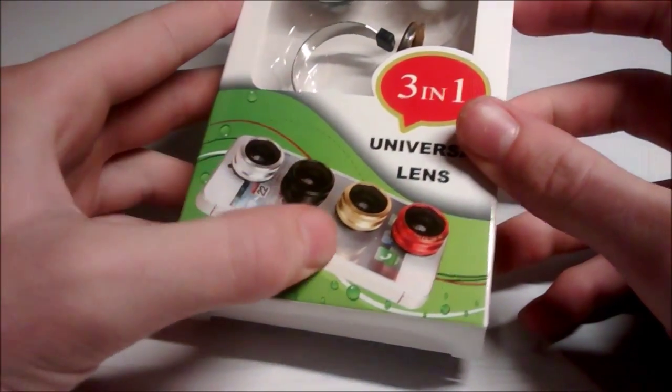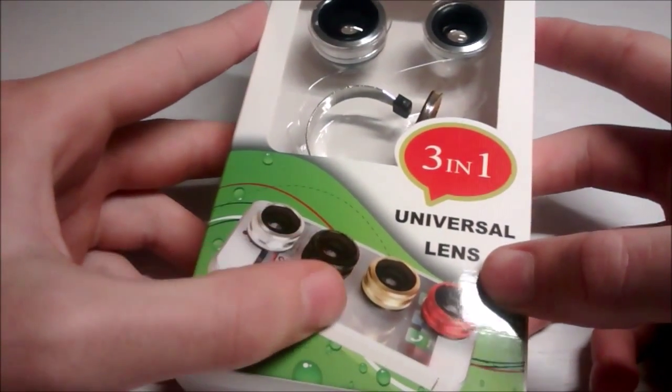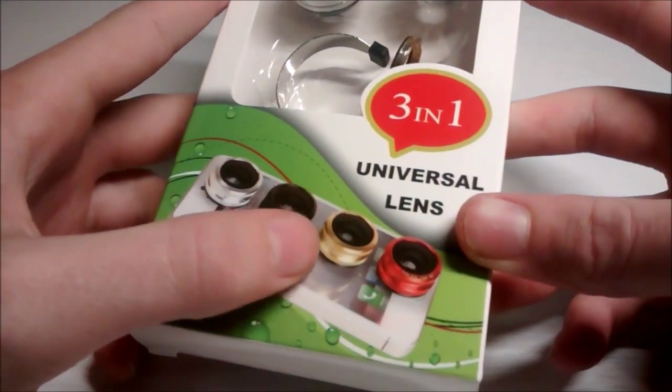So here we have a picture of the lenses on the phone. These are the four colors you can get it in: silver, black, gold, or red.